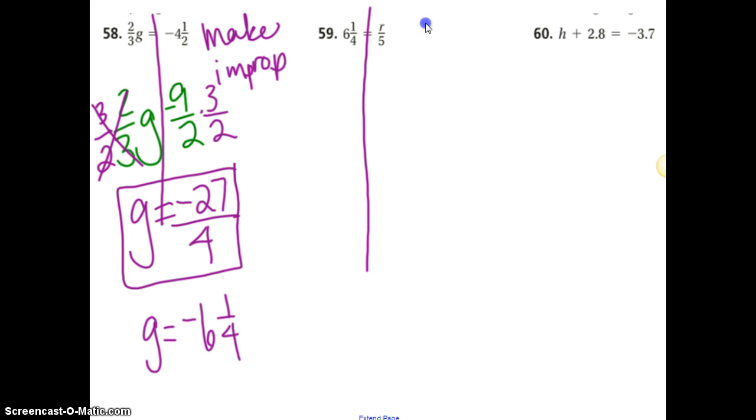Ooh, 59 caused a lot of problems today. But it's really not that bad. J hook at first. 6 times 4 plus 1. 25 fourths. Equals r divided by 5. Alright, so how do I undo divided by 5? Times 5. So over here, 5 over 1. Not bad. 5 sets of 25. Makes 125 over 4. Equals r. So simplify out. So you can leave it like this.